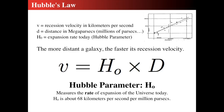Hubble's law shows a relationship between the recession velocity of a galaxy in kilometers per second and its distance in megaparsecs — millions of parsecs — related by the Hubble parameter, or the expansion rate. The velocity equals some number times the distance. The Hubble parameter is essentially a rate of change of distance, so the more distant a galaxy, the faster its recession velocity. Currently the best-accepted value is H₀ is roughly 68 kilometers per second for every megaparsec.